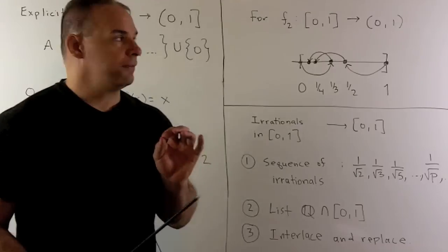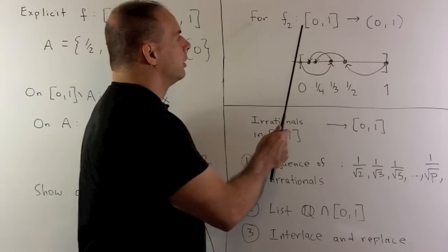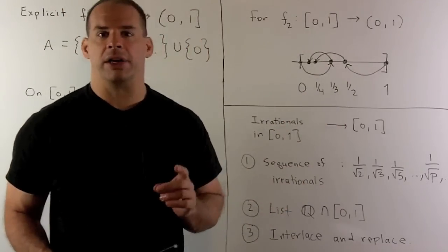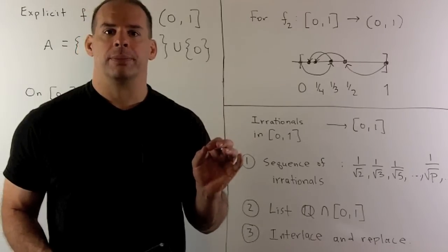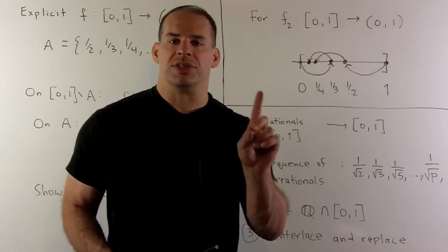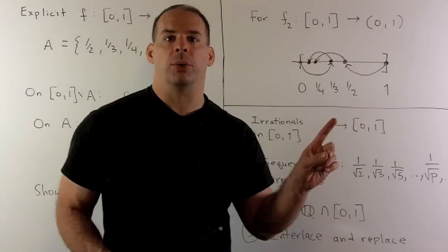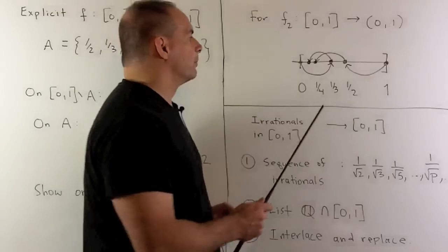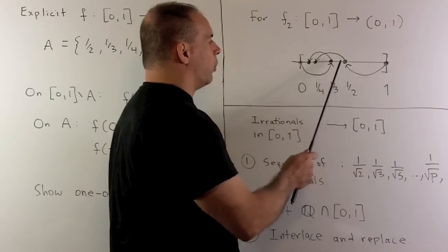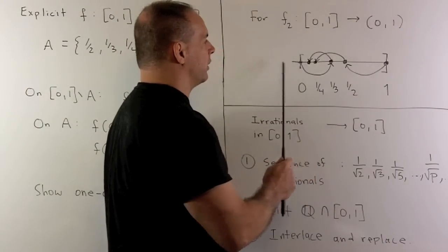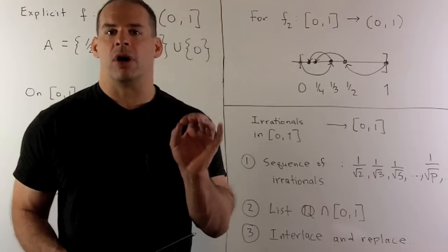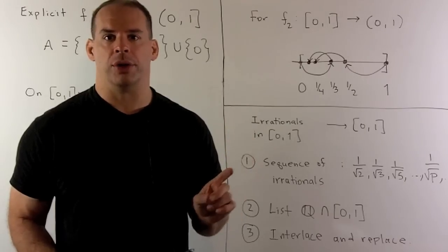To show that the closed interval [0,1] and the open interval (0,1) have the same cardinality, we use the same trick. Instead of shifting by 1, we shift by 2 using the same sequence. We move 0 to 1/3, the point 1 goes to 1/2, and then proceed on the other numbers as usual. I'll leave it to you to write up the function and show it's one-to-one and onto.